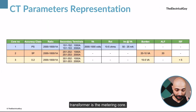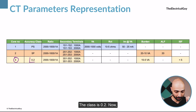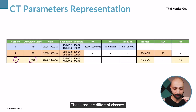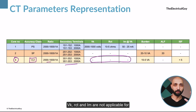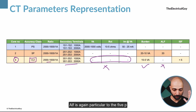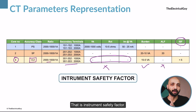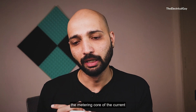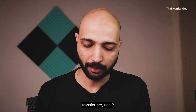The third core in the current transformer is the metering core. The class is 0.2 — there are different classes including 0.1, 0.5, 0.2, and 0.2S. It has the same ratios. VK, RCT, and IM are not applicable for metering. The burden is applicable: 15VA for 2000 ampere ratio and 5VA for 1000 ampere ratio. ALF is not applicable for metering. Instead, metering uses ISF — instrument safety factor — which is mentioned as less than 5. This is important to protect the instrument connected across the metering core.